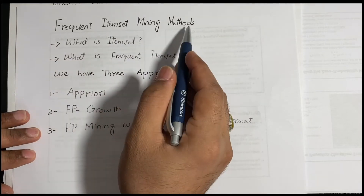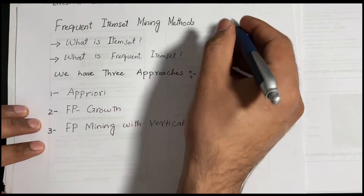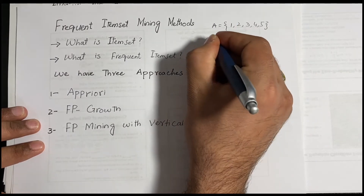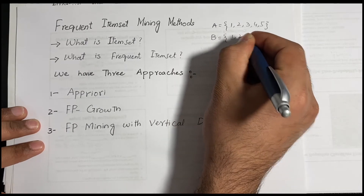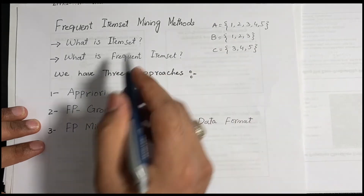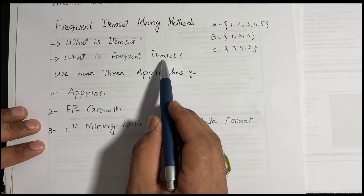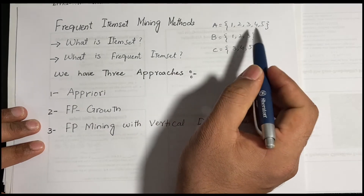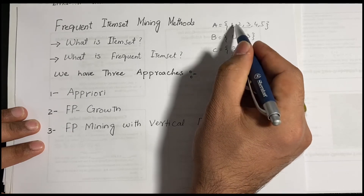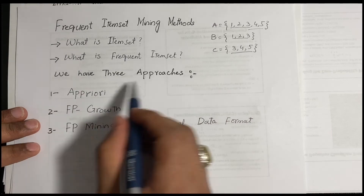In this video you will learn frequent item set mining methods. A set of items together is called an item set. For example, we have sets like {1,2,3,4,5}, {1,2,3}, and {3,4,5}. Frequent item sets are items that repeat frequently across sets. For example, {1,2,3} and {3,4,5} are frequent item sets because they repeat in multiple sets.